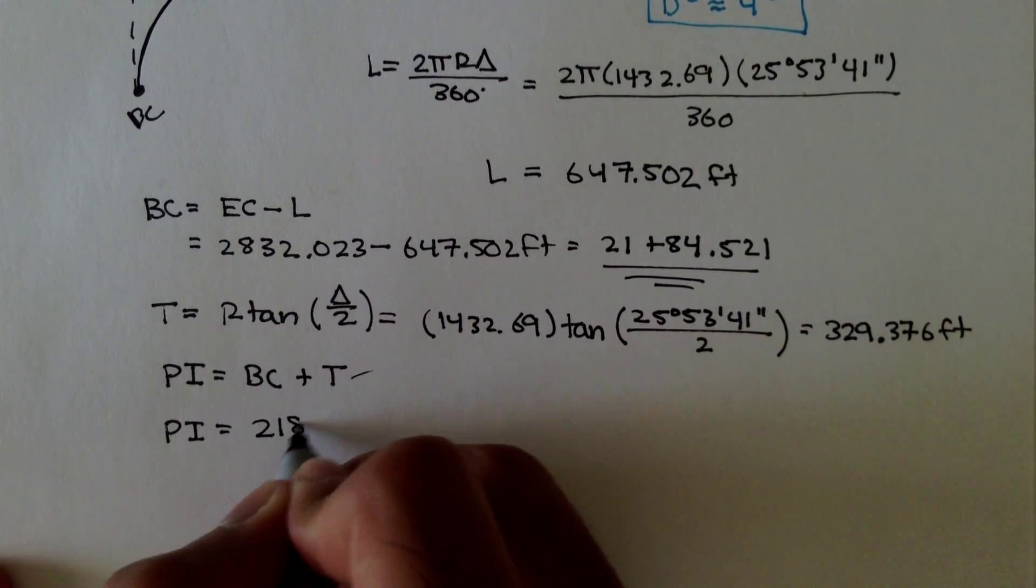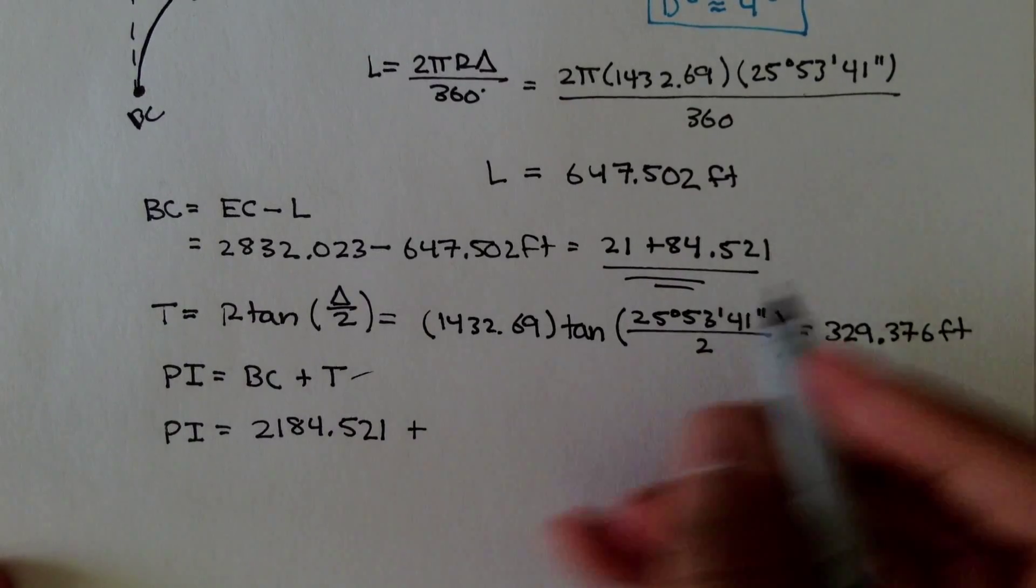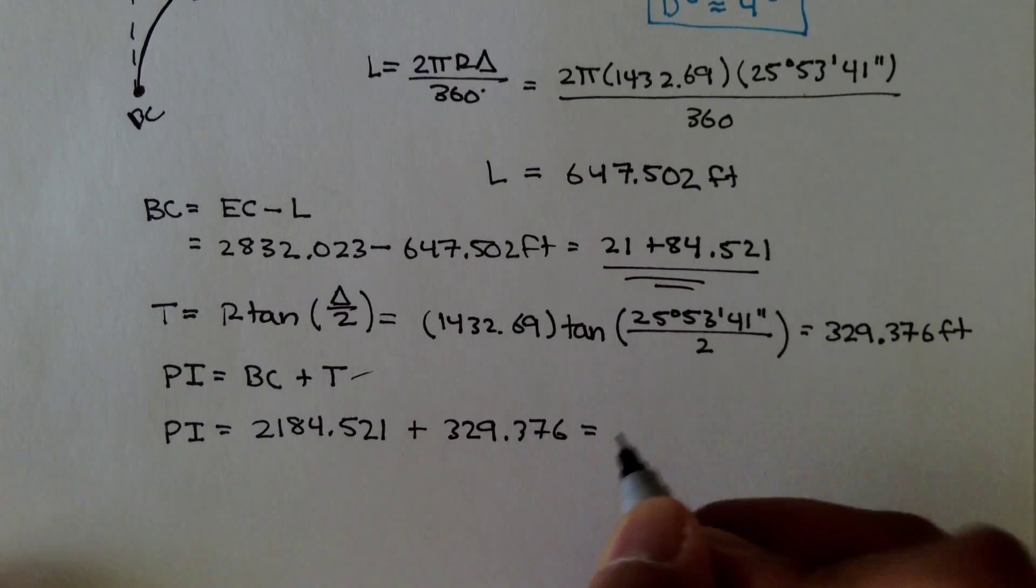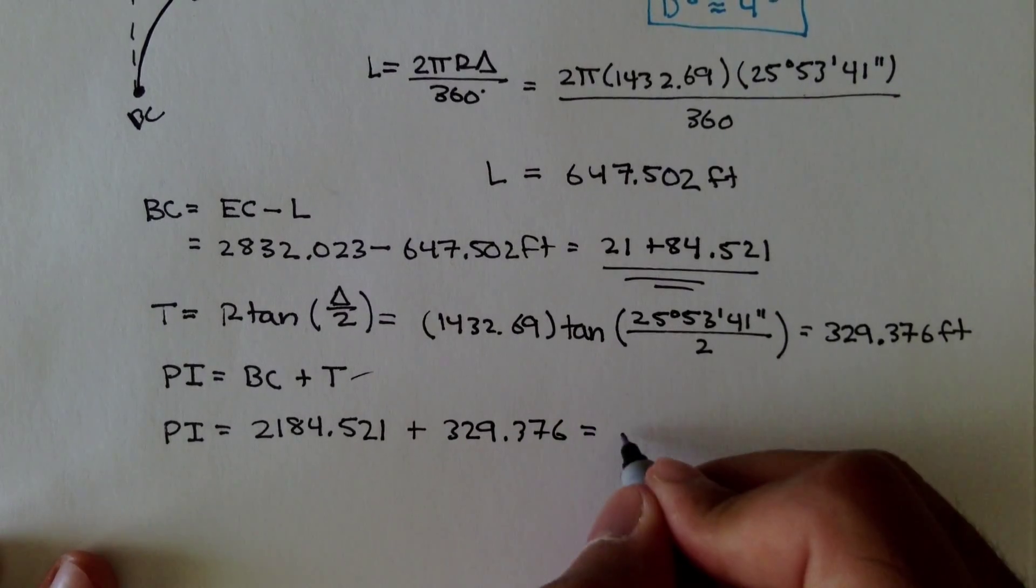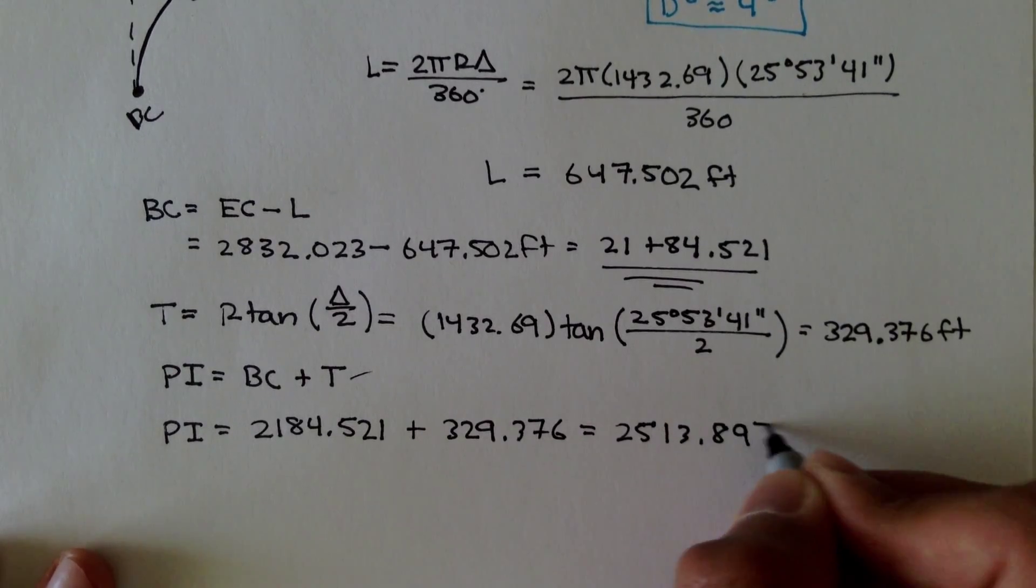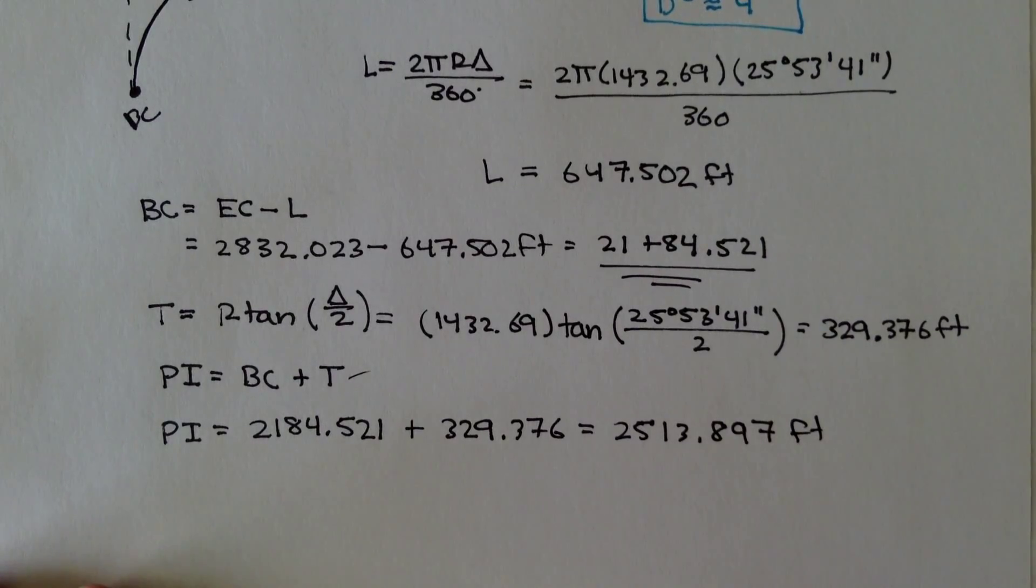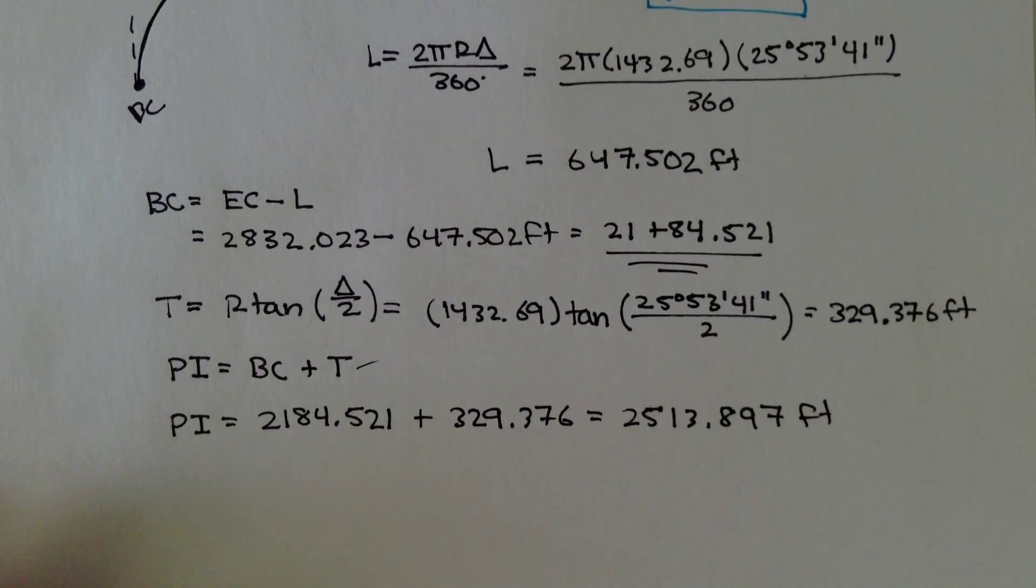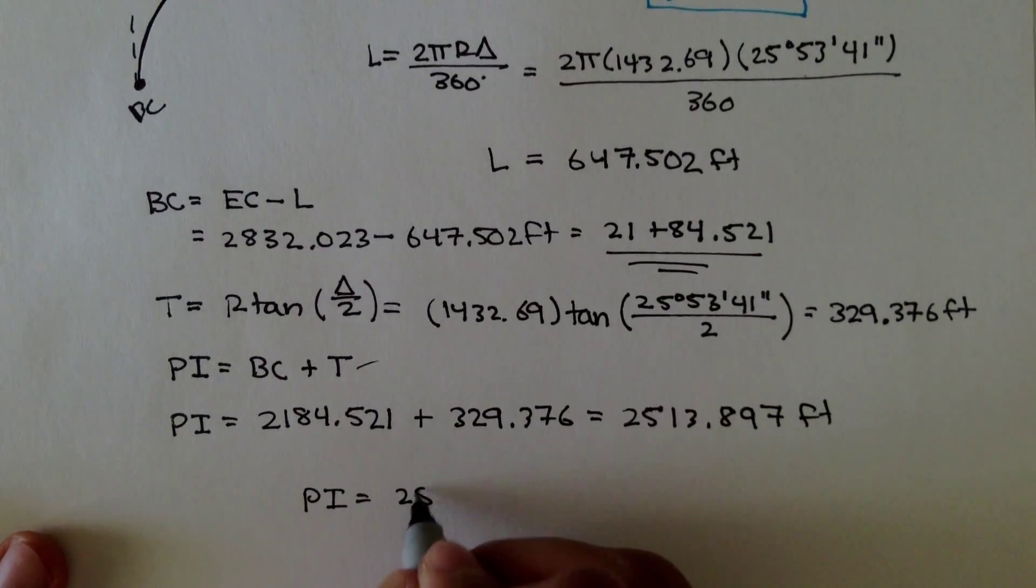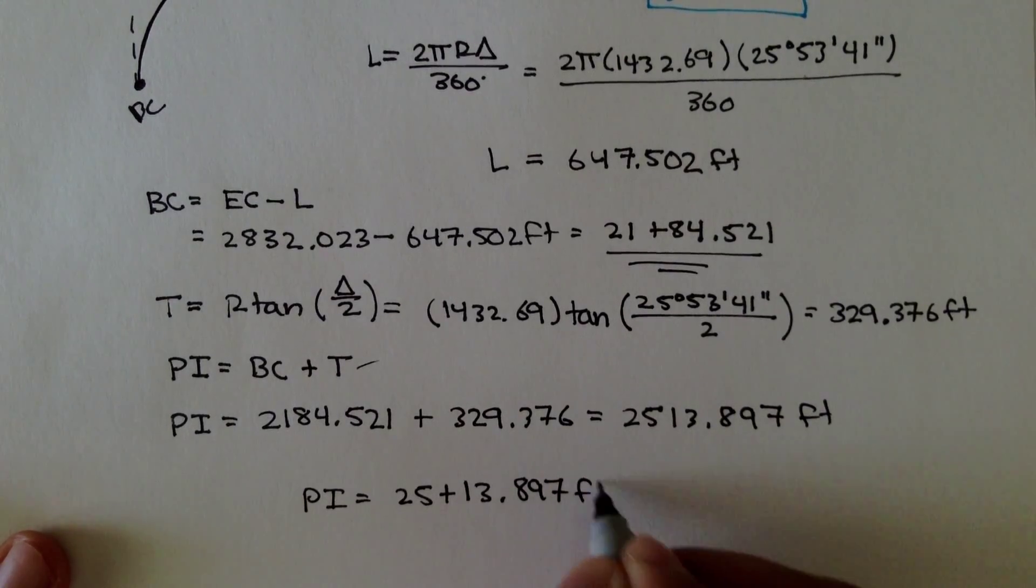BC was 2184.521 plus 329.376. We add those two values together. We get 2513.897 feet. So the station for PI is located at 25 plus 13.897 feet.